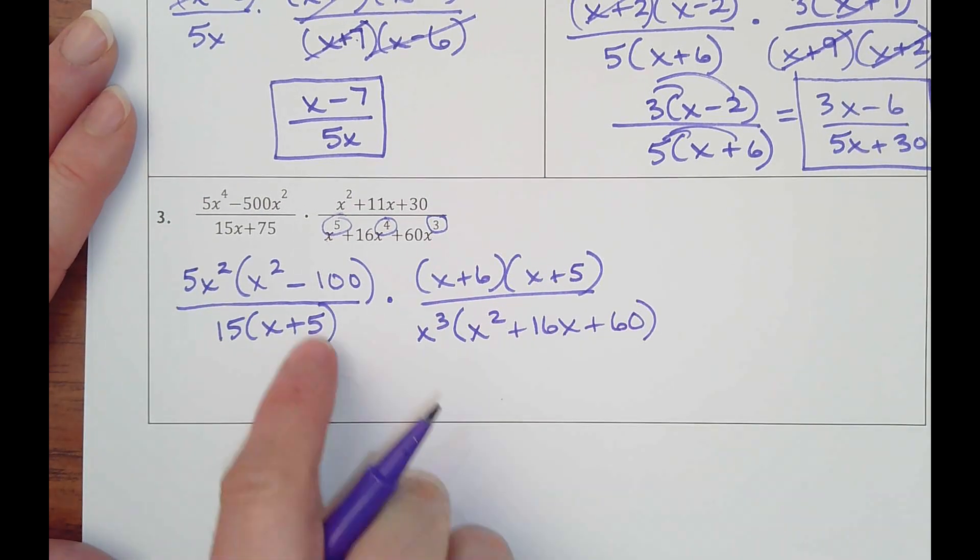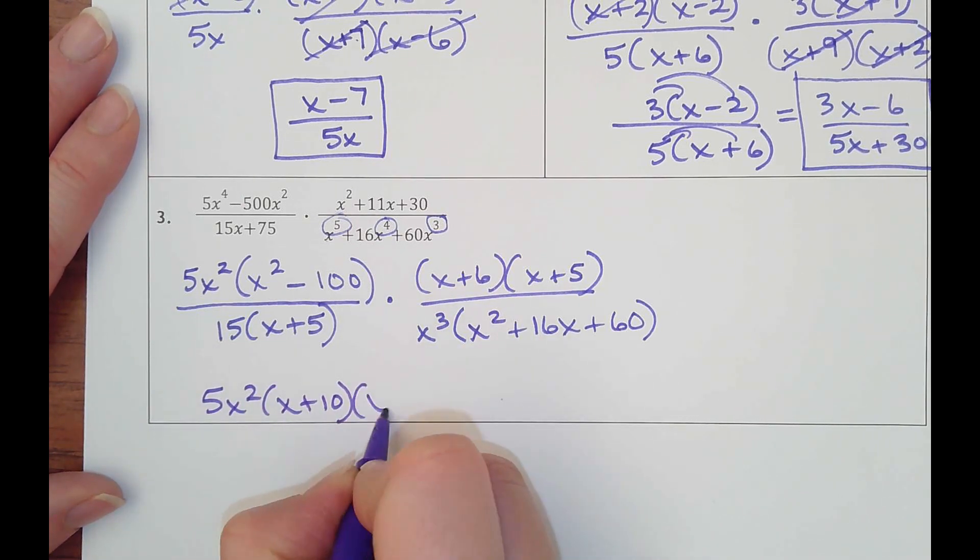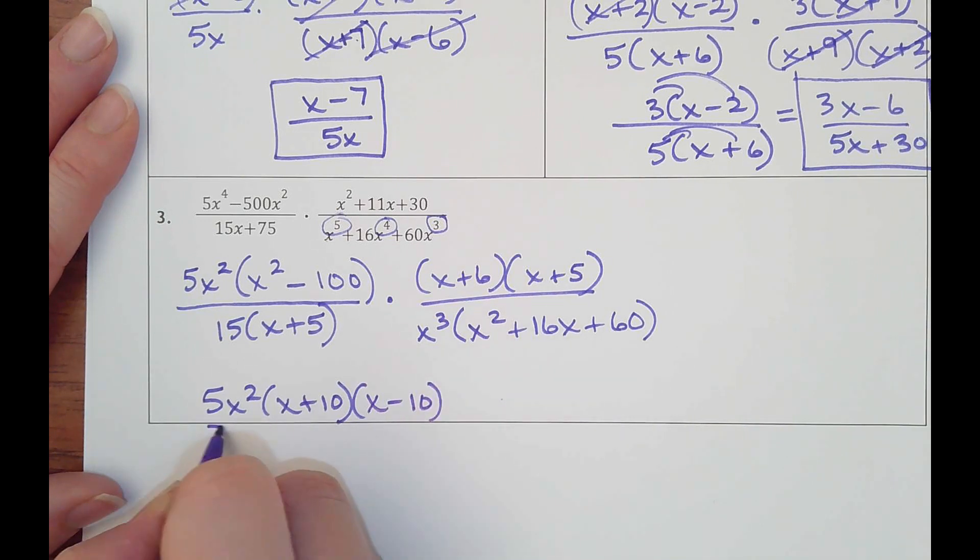So now I need to factor again. This is a difference of squares. It would be x plus 10 times x minus 10 over 15 times x plus 5.